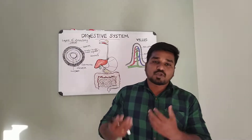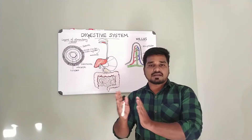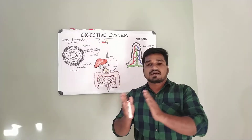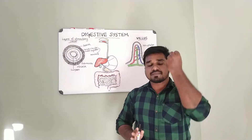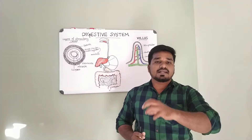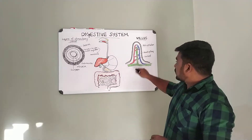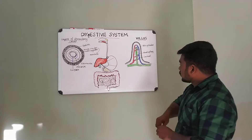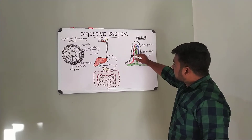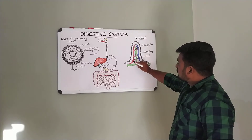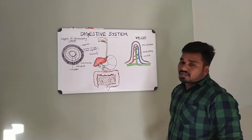The small intestine is the major site of chemical digestion and absorption. Food is broken down into small particles — glucose, amino acids from protein, and fatty acids from fat. Absorbed nutrients enter the blood capillaries, while fats enter the lacteal lymphatic capillaries. Digestion in the small intestine is essentially complete.